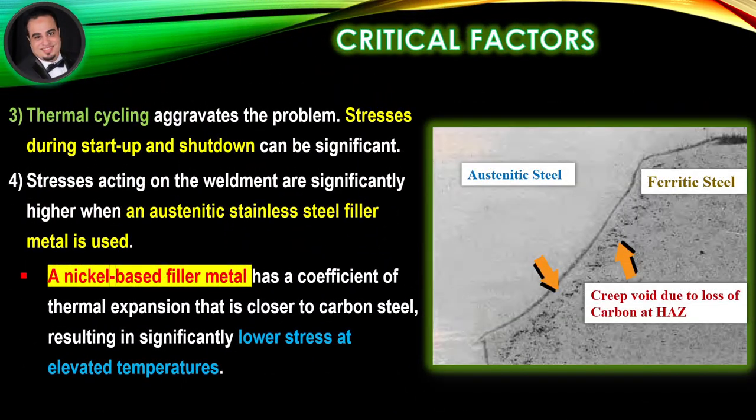Thermal cycling aggravates the problem. Stresses during start-up and shut-down can be significant. Dissimilar metal weld cracking due to stresses acting on the weldment are significantly higher when an austenitic stainless steel filler metal is used. We can avoid dissimilar metal weld cracking by using nickel-based filler metal, because nickel-based filler metal has a coefficient of thermal expansion closer to carbon steel, resulting in significantly lower stress at elevated temperatures.